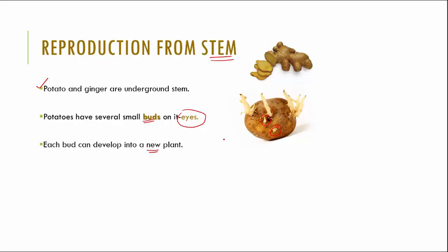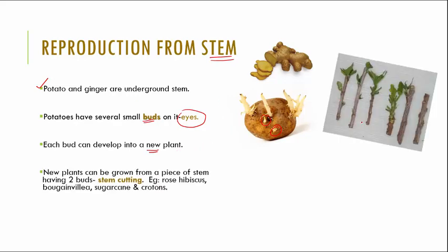Some farmers and gardeners, apart from using buds, will take cuttings of stem and plant that. They take a piece of stem that has two buds in it — this is one bud and this is another bud. They plant this stem and it starts growing into a new plant. This method is called stem cutting. Examples of plants grown this way include rose, hibiscus, bougainvillea, sugarcane, and crotons.